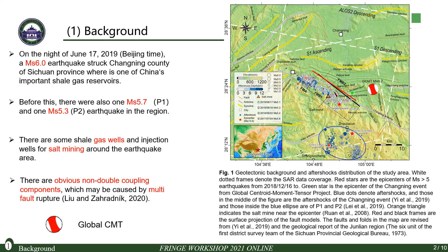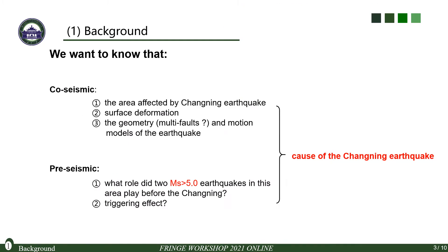There are some shale gas wells and injection wells for salt mining around the earthquake area, so it has attracted more attention. Moreover, there are obvious non-double couple components which may be caused by multi-fault structure. The figure on the right shows the location of salt mining, the epicentral location of the Changlin, P1 and P2.